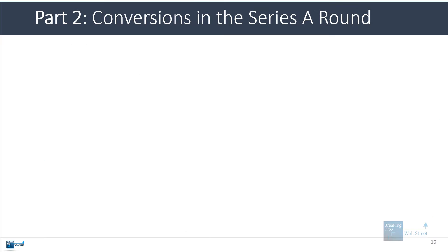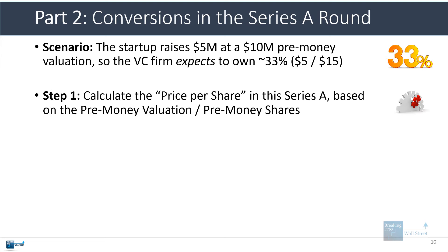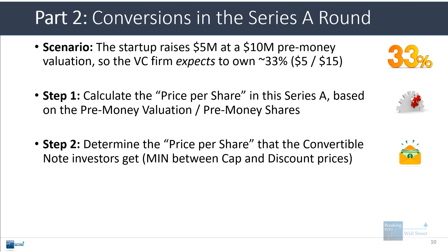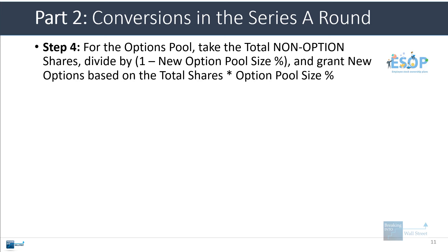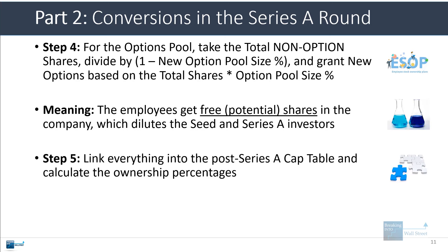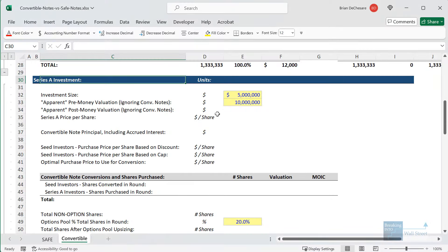When you get to the Series A round, this is where things start to differ. We're going to assume the Series A investors invest $5 million at a $10 million pre-money valuation, so they expect to own 33%. The steps are: calculate the price per share, determine the price per share that the convertible note investors get, calculate the new shares for each group in this round, factor in the options pool and gross up the total share count, then link everything in the cap table and calculate the ownership percentages. As a result, the Series A investors will own less than they would have without the convertible note.